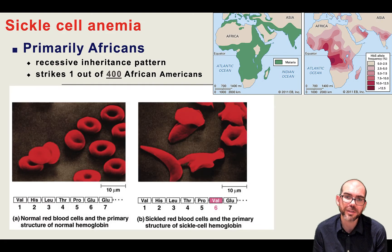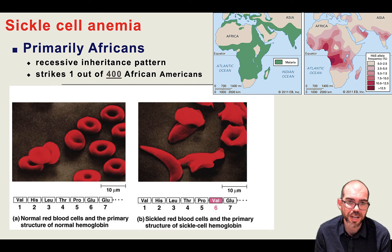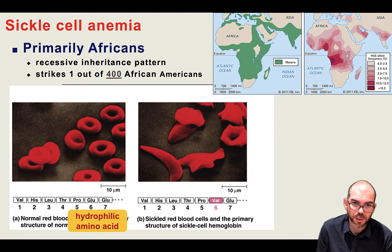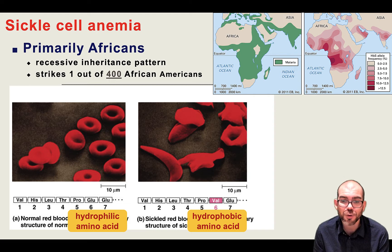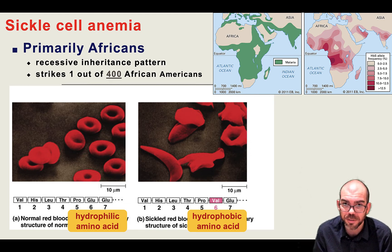A little more information about sickle cell anemia: this primarily affects African Americans and can strike about 1 out of 400. The reason these cells are changing is that the sixth amino acid — when it's glutamic acid — is hydrophilic, attracted to water. But if it has a missense mutation and becomes a valine, that is hydrophobic. That hydrophobic activity is going to cause the hemoglobin protein to fold in and create the sickle cell shape.